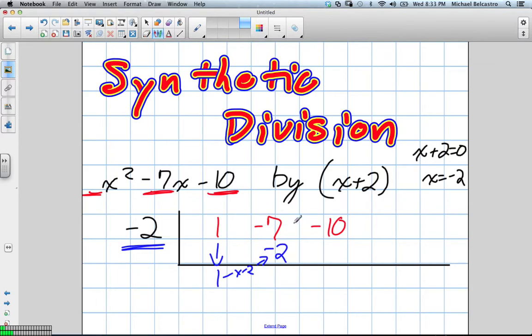Now, in long division, we usually do subtraction. In synthetic, we do addition. Think of it like our upside down long division, so we use a different sign. So, we add these two together. Negative 7 plus negative 2 gives us negative 9.